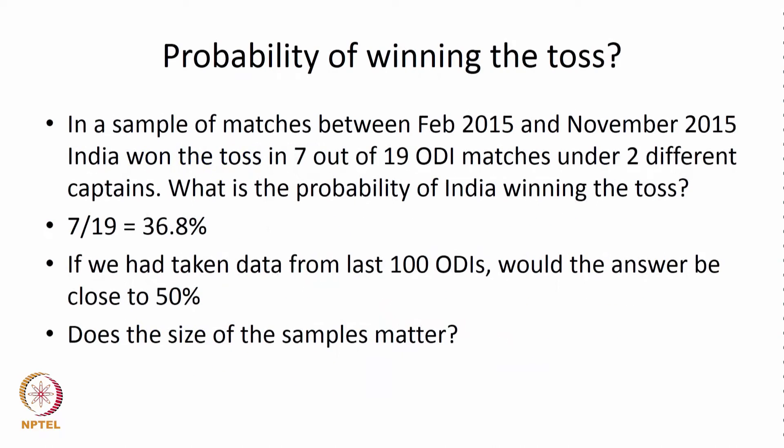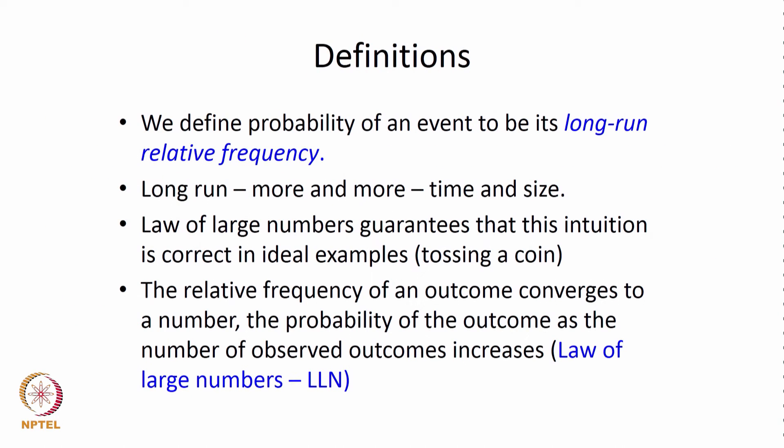For example, if 7 out of 19 is correct data and the Indian captain won the toss in 7 out of 19, the probability of winning the toss based just on this is 36.8 percent and not 50 percent. Whereas if we had taken 100 matches and looked at it, the result would be much closer to 50 percent than 36.8. So the law of large numbers is extremely important to compute and understand probability.